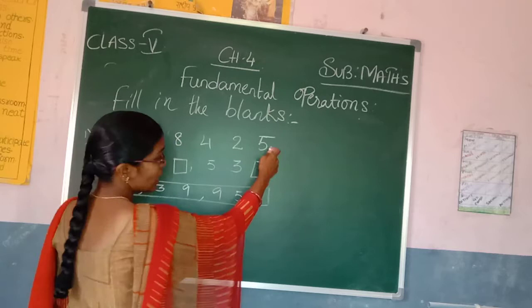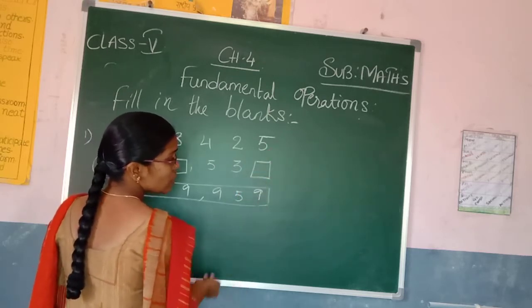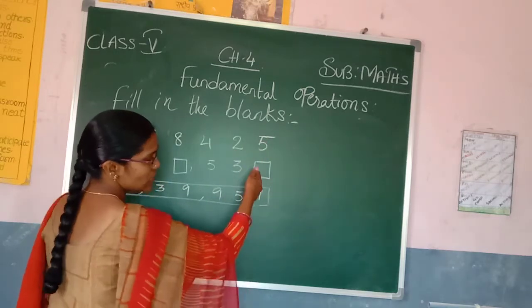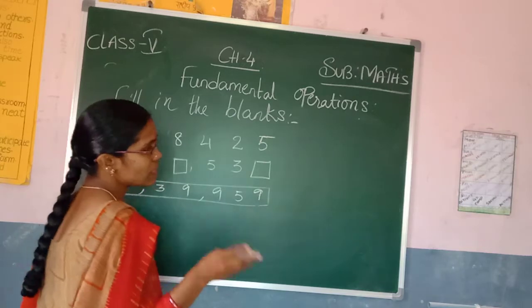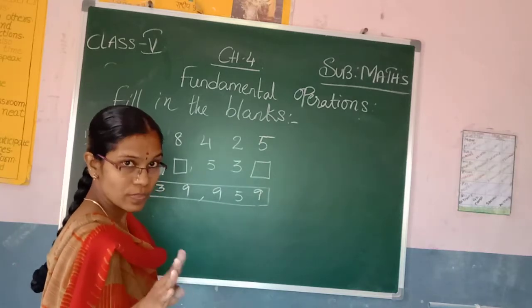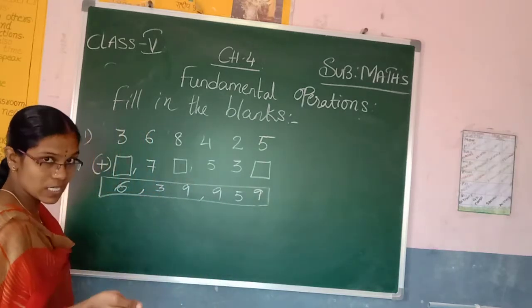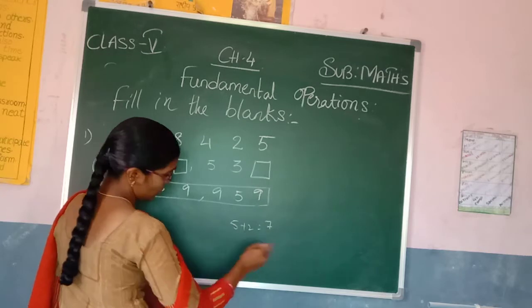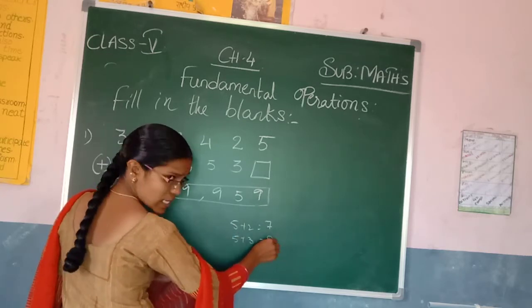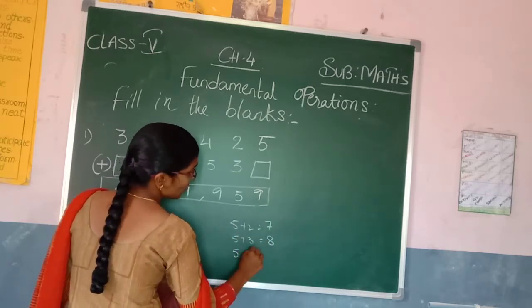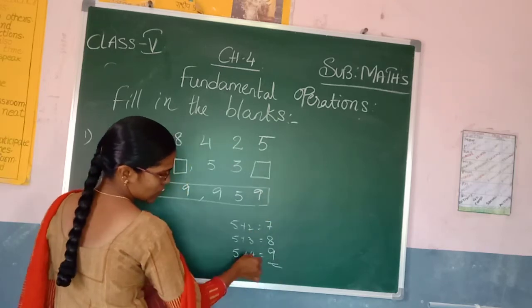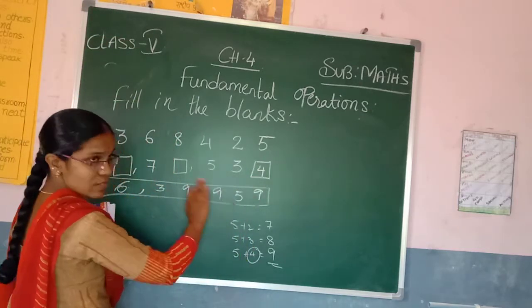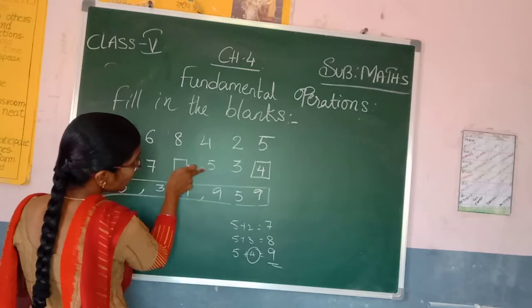Suppose here 9 is given and here 5 is given. So which number we have to do? When we are adding 5 with some number, what answer will become 9? 5 plus 1 is 6 — no. 5 plus 2 is 7 — no. 5 plus 3 is 8 — no. So 5 plus 4 is 9 — correct! So which number we have to add here? 4. And 4 plus 5 is 9.